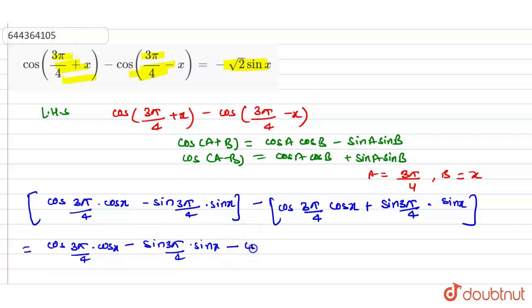When we open this bracket we have minus of cos 3π/4 cos x. This will be minus sin 3π/4 sin x.